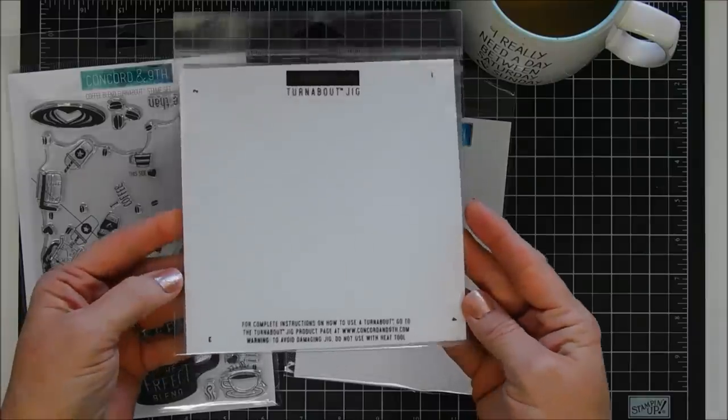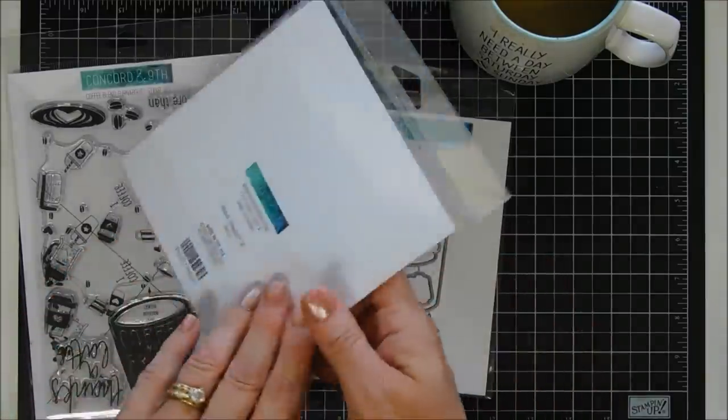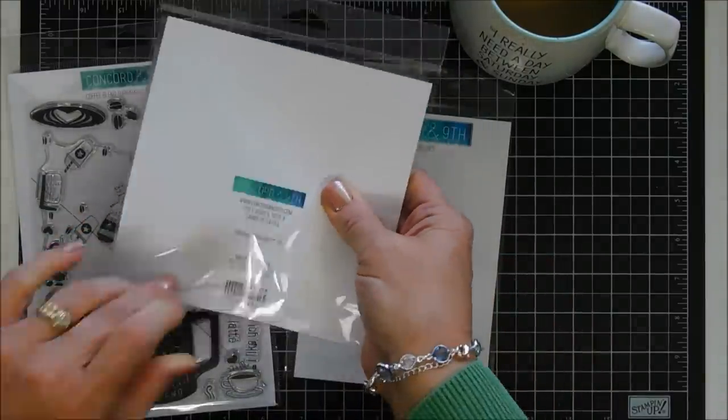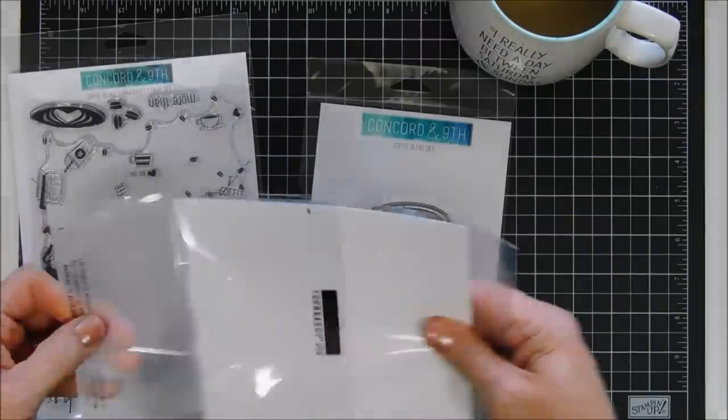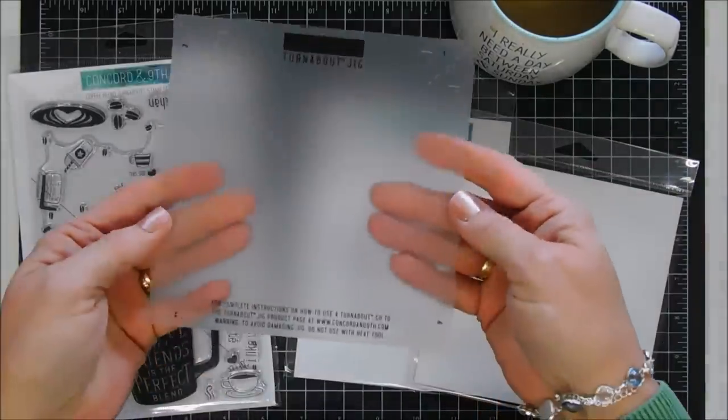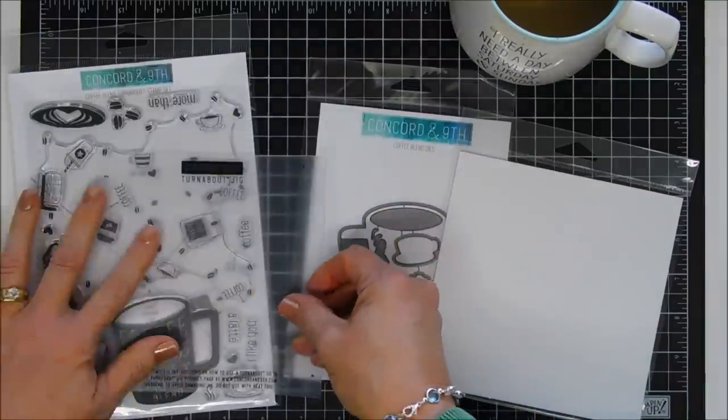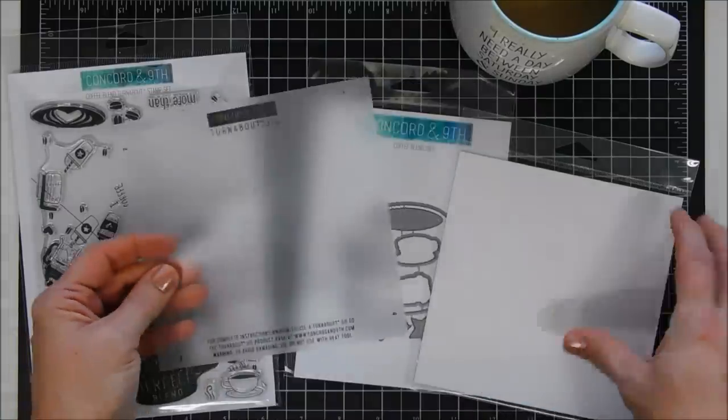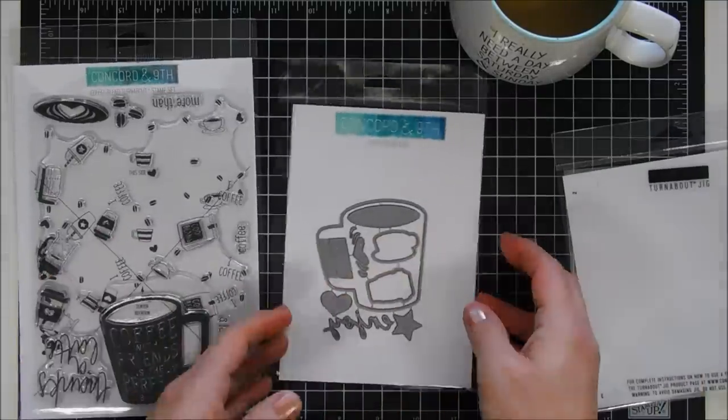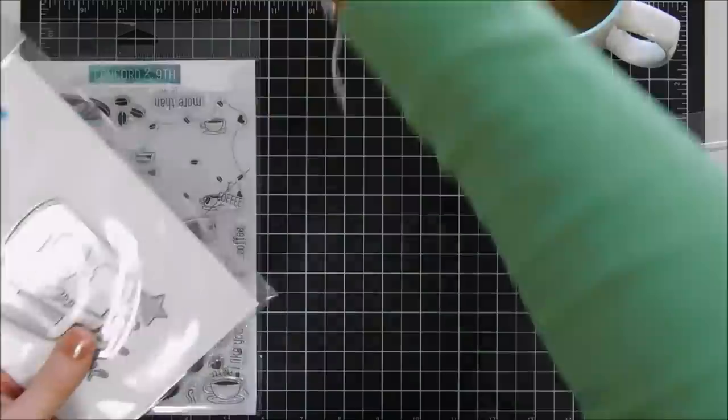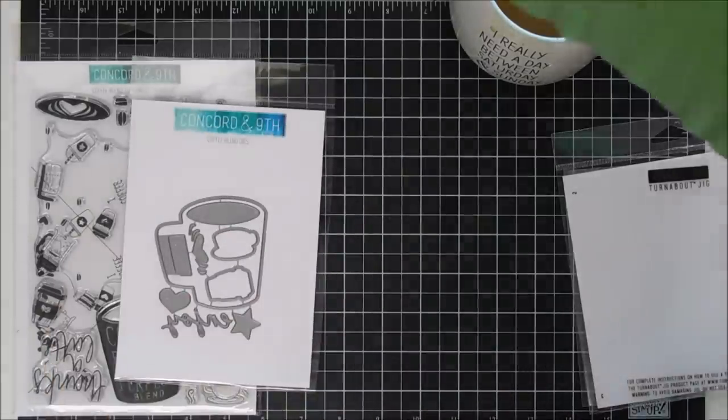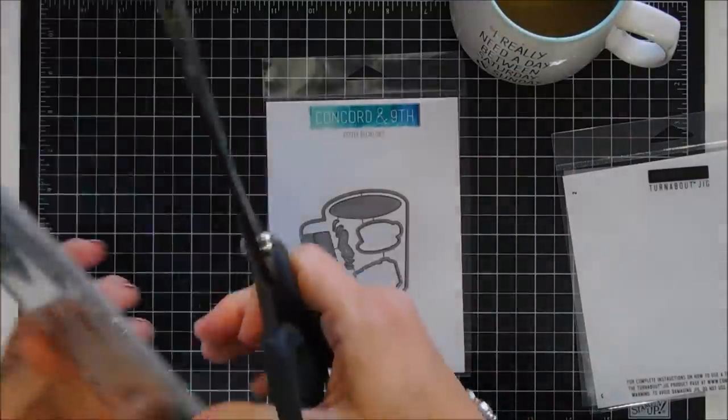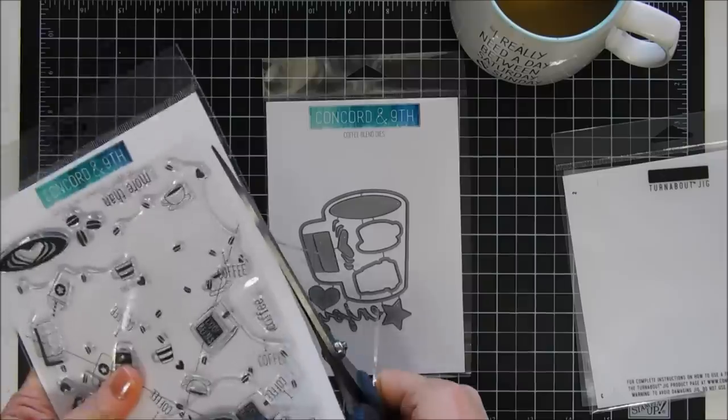Now this is the turnabout jig. I will be using this today to aid me in my turnabouting. This is a heavy duty panel where you're going to turn it. It's labeled on all the corners one through four, and then there's guides on here for how to position your paper landscape or portrait style, and for an A2 size card base or panel.